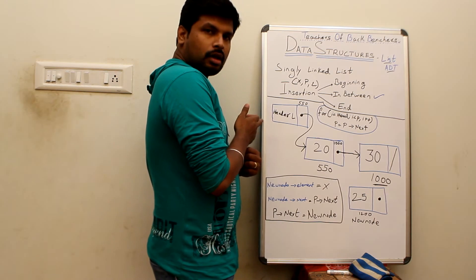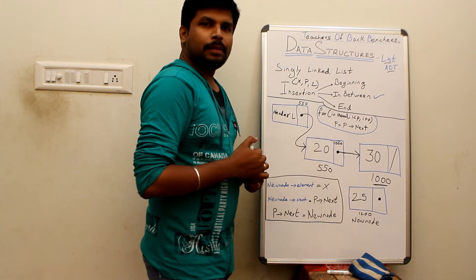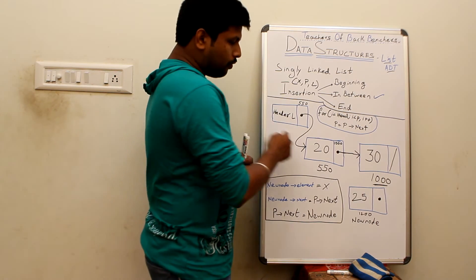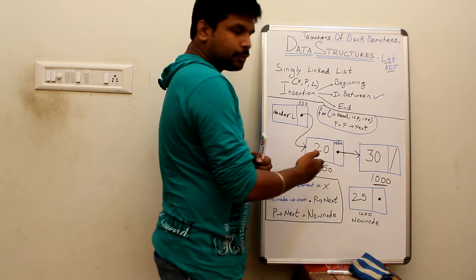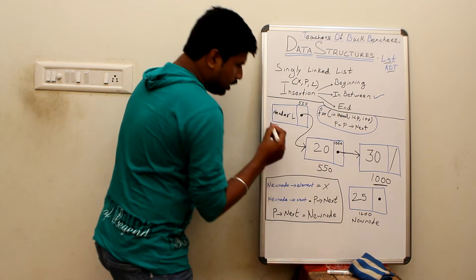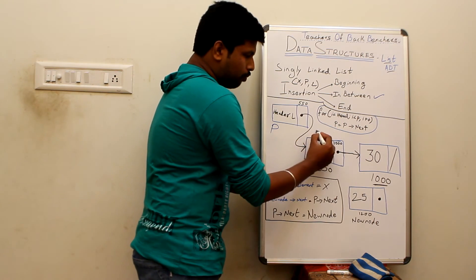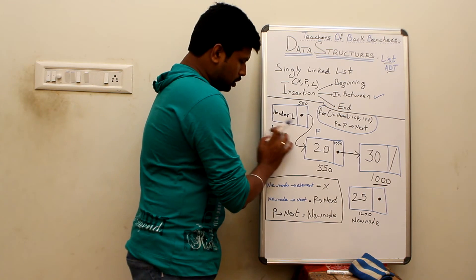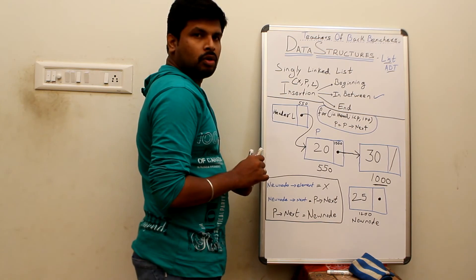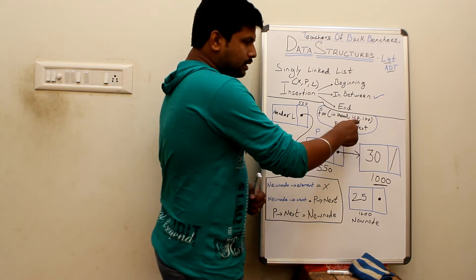The for loop starts at the head label. The condition is: for i equal to head, while i is less than p, do i plus plus. Since our position p is 2, i can be at most 1. Inside the loop, p is set to p's next value. So initially p points to the head; after the first iteration p moves to its next value, updating to the next node's address.